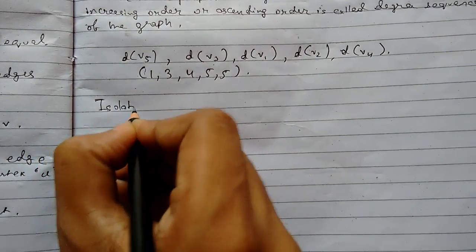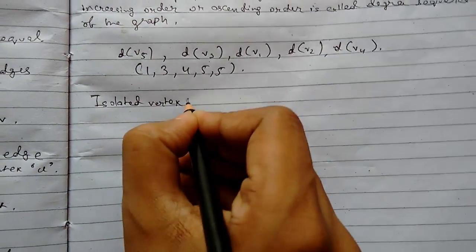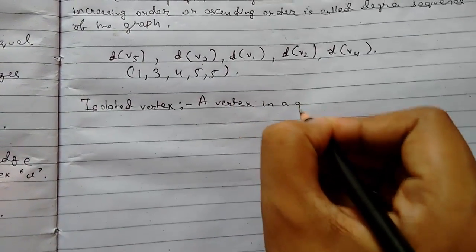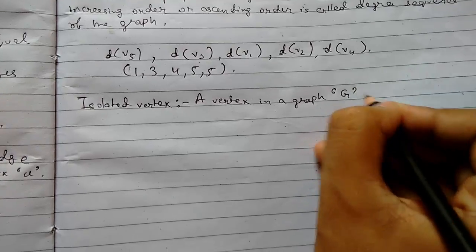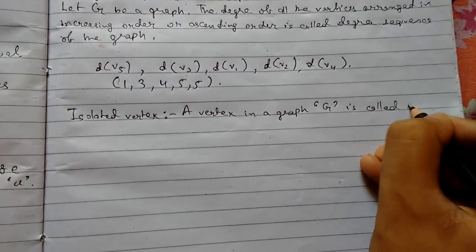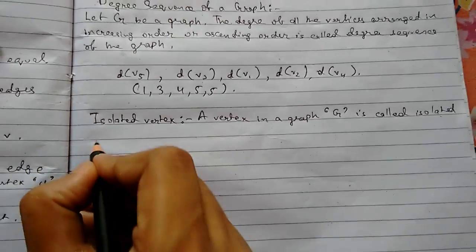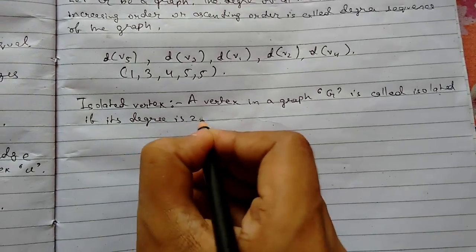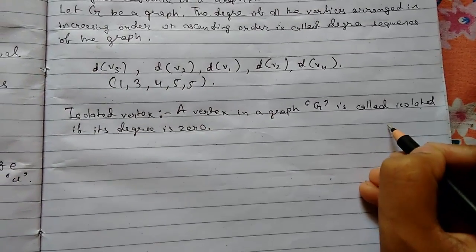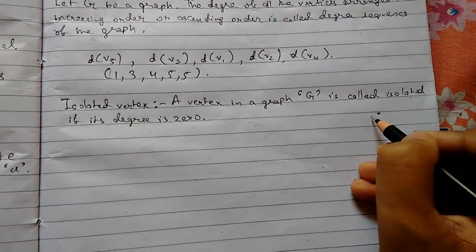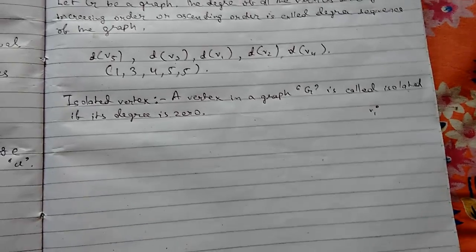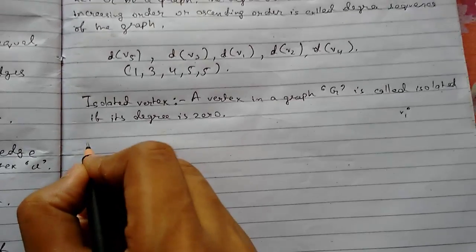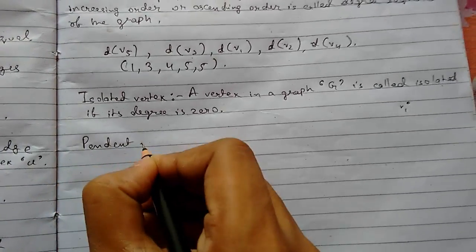Isolated vertex: a vertex in a graph G is called isolated if its degree is zero. Suppose a vertex has no edge connecting to it or incident to it — so its degree will be zero and it will be known as an isolated vertex.